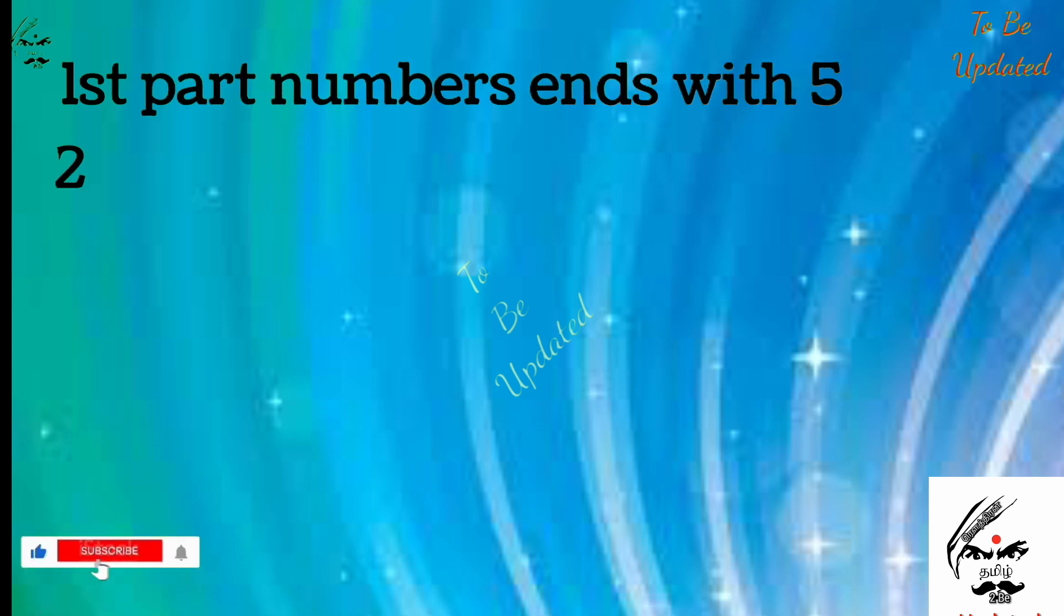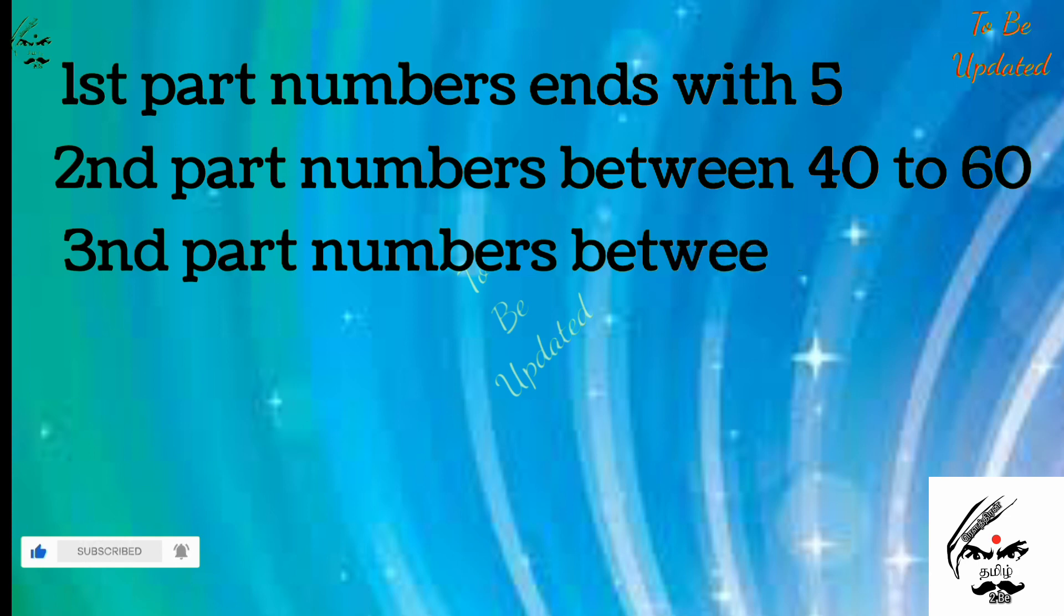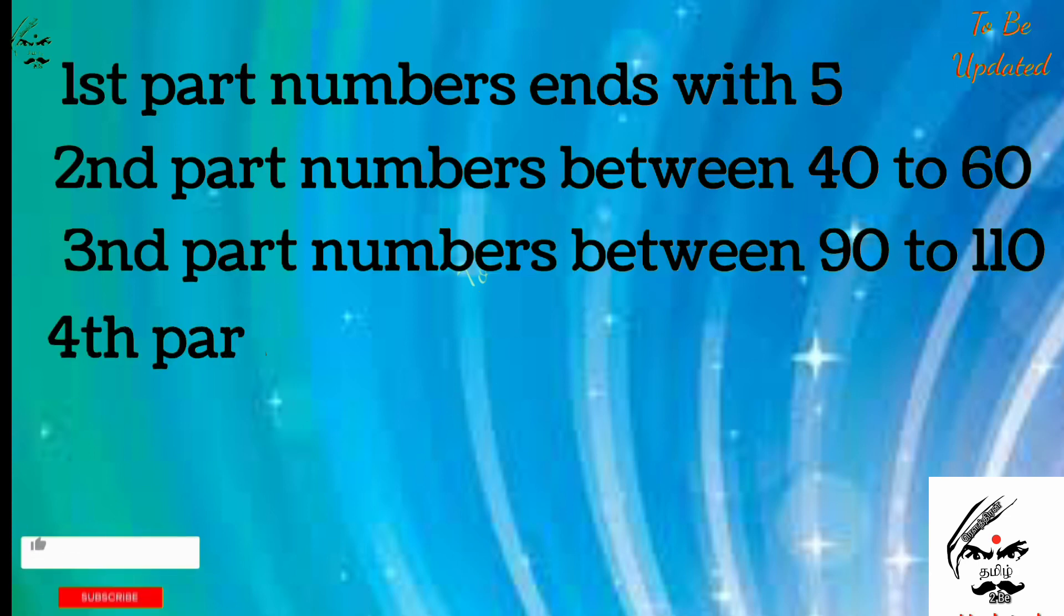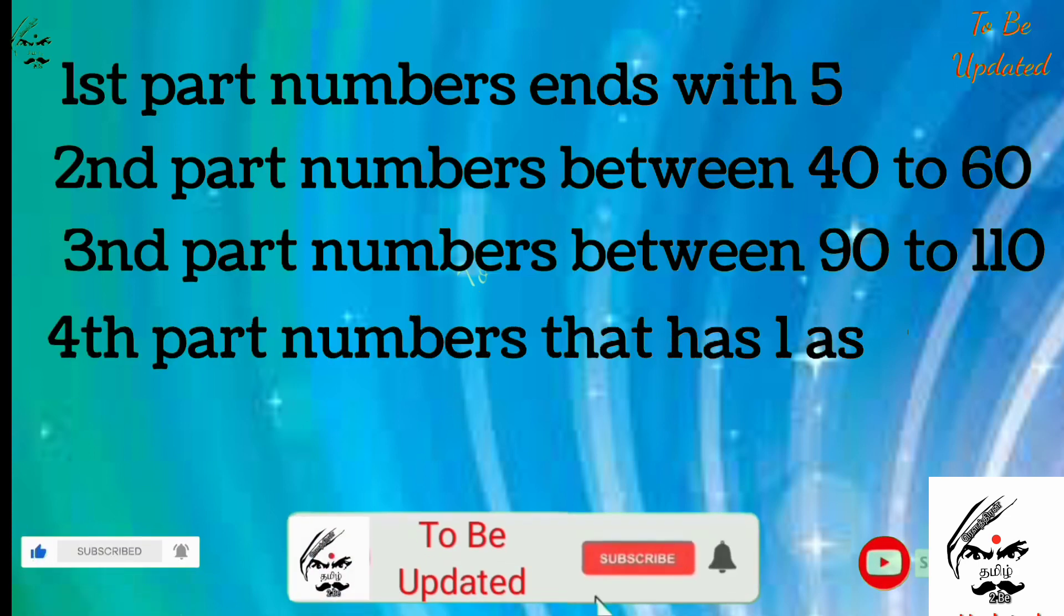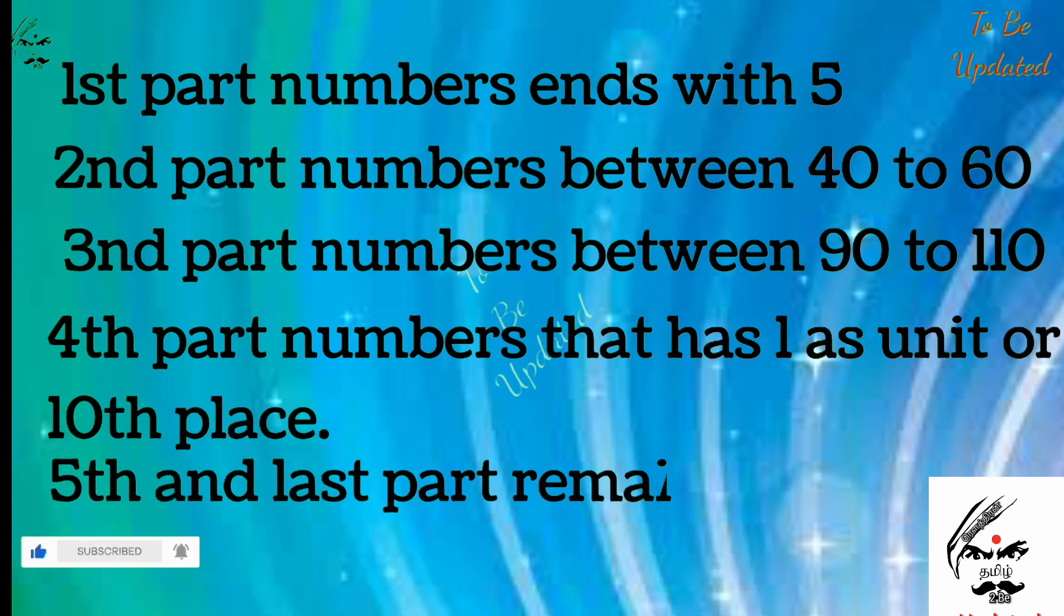The first part is numbers that end with 5, and the second part is numbers between 40 to 60, and the third part is numbers between 90 to 110, and the fourth part is numbers that have one as the unit digit or in tenth place, and the fifth and last part is the remaining numbers.